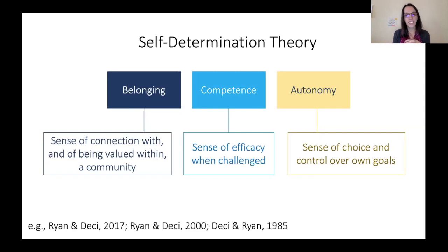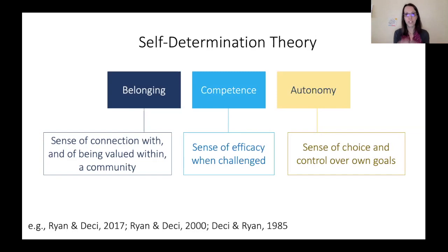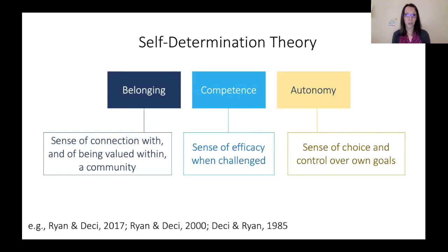Students' sense of belonging is disrupted through not having that physical space with each other. Their competence — what does it mean to be successful? How am I going to be sure that I can still be the student I want to be and achieve the things I want to, being this removed and with all of the open questions that are still here? And autonomy is something I think we're all struggling with right now — a sense of choice and control given the situation of what it takes to stay safe and help each other out.